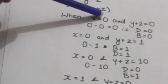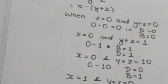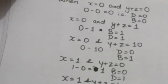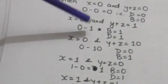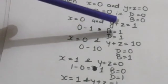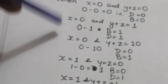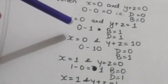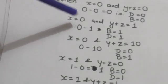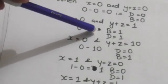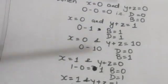When X equals 0 and Y plus Z equals 0, we know 0 minus 0 equals 0, so D equals 0 and B equals 0. When X equals 0 and Y plus Z equals 1, X is smaller than Y plus Z so we need to borrow 1 from the higher significant stage, making B equal to 1. When we borrow 1, X becomes 2, and 2 minus 1 equals 1, so D equals 1.